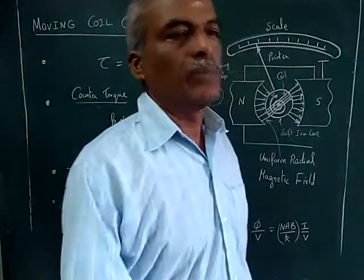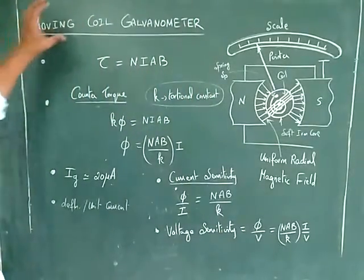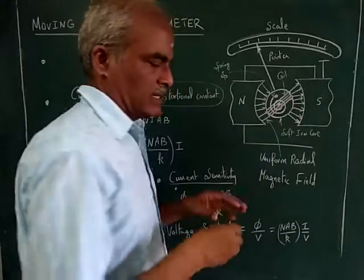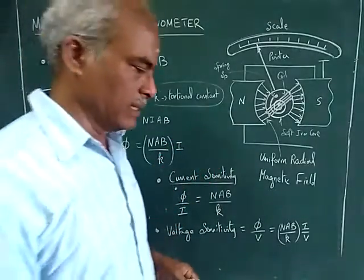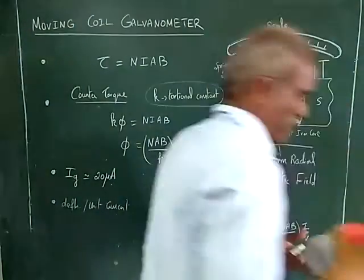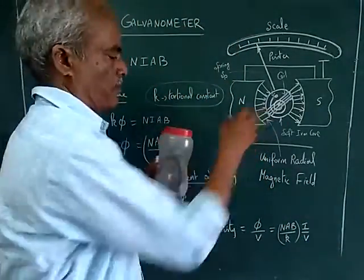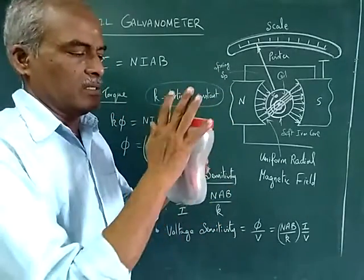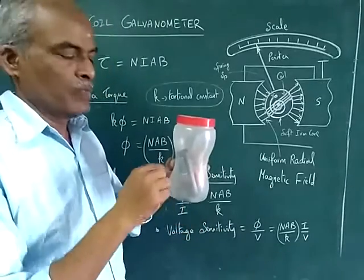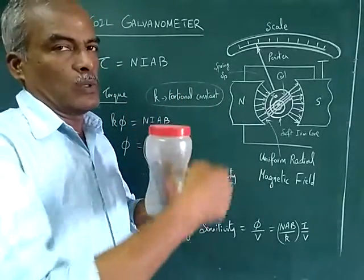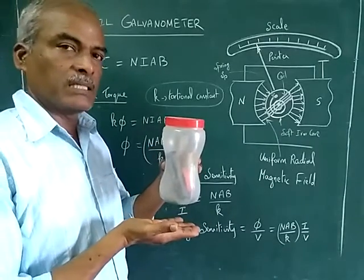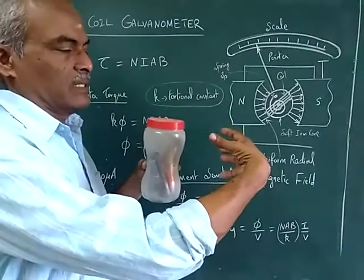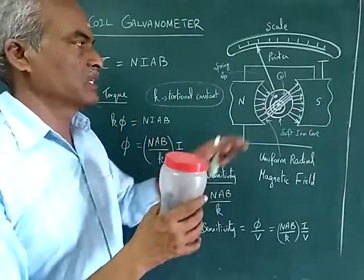Looking at the diagram: in the moving coil galvanometer you have a north pole and south pole. The coil is wound like this — I am drawing a big one. This here is a soft iron core, cylindrical in nature, over which the coil is wound. We have a balancing arrangement at the bottom as well as on top, and this entire assembly is suspended in a constant magnetic field.